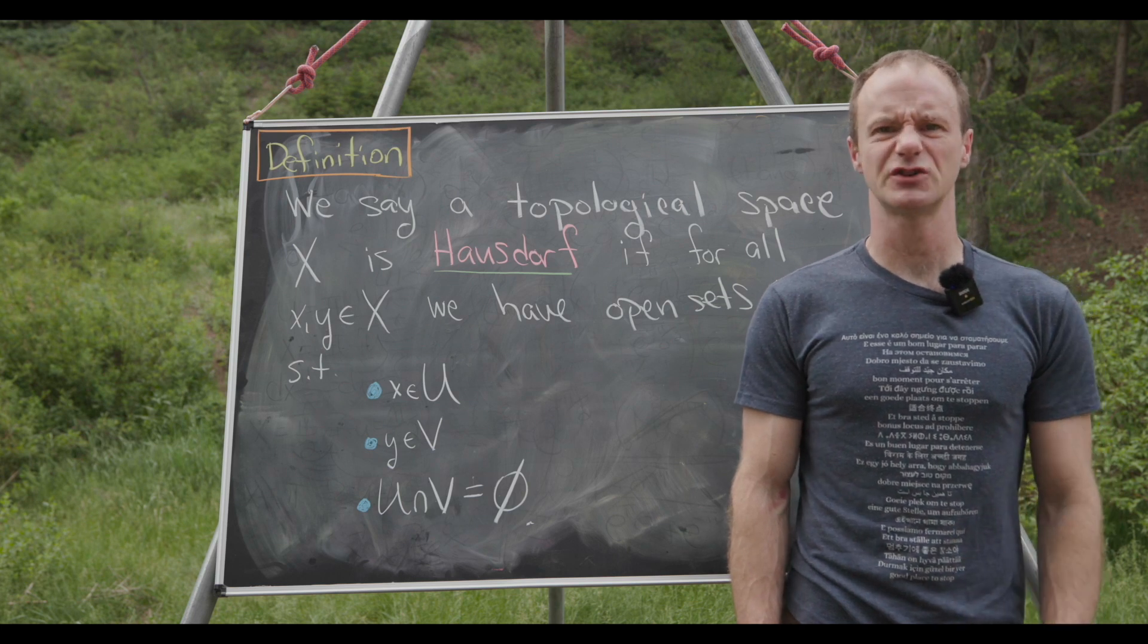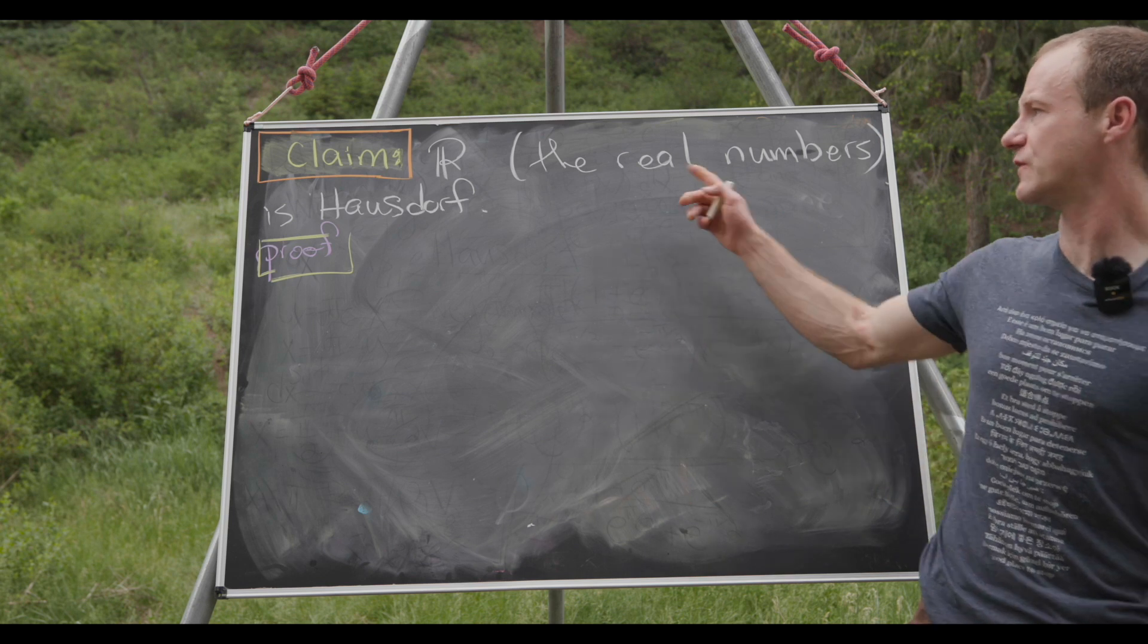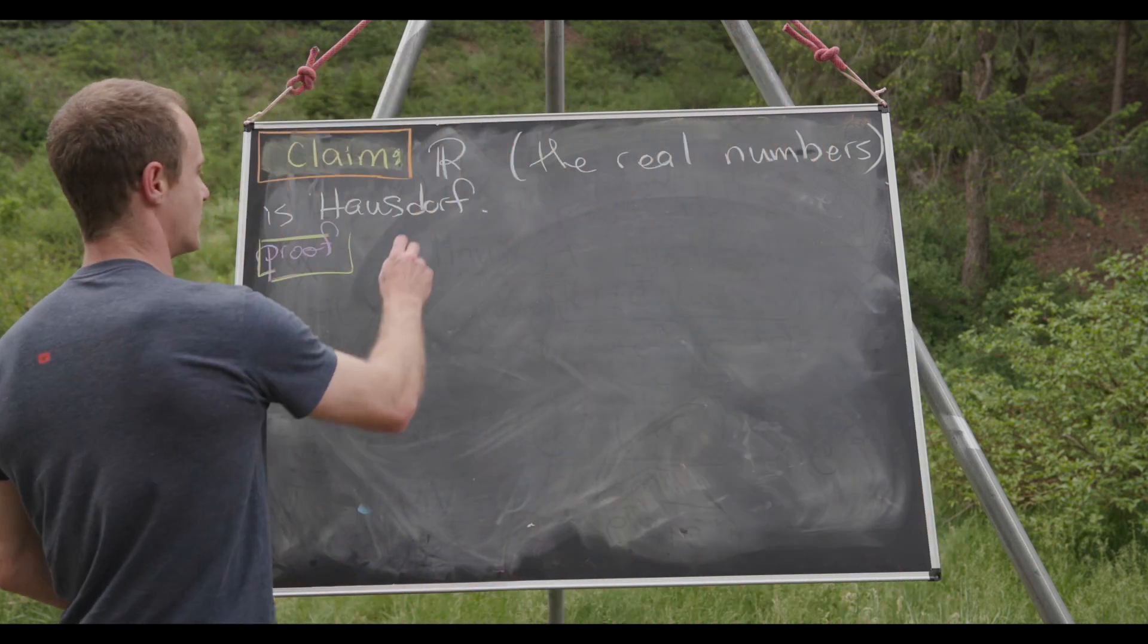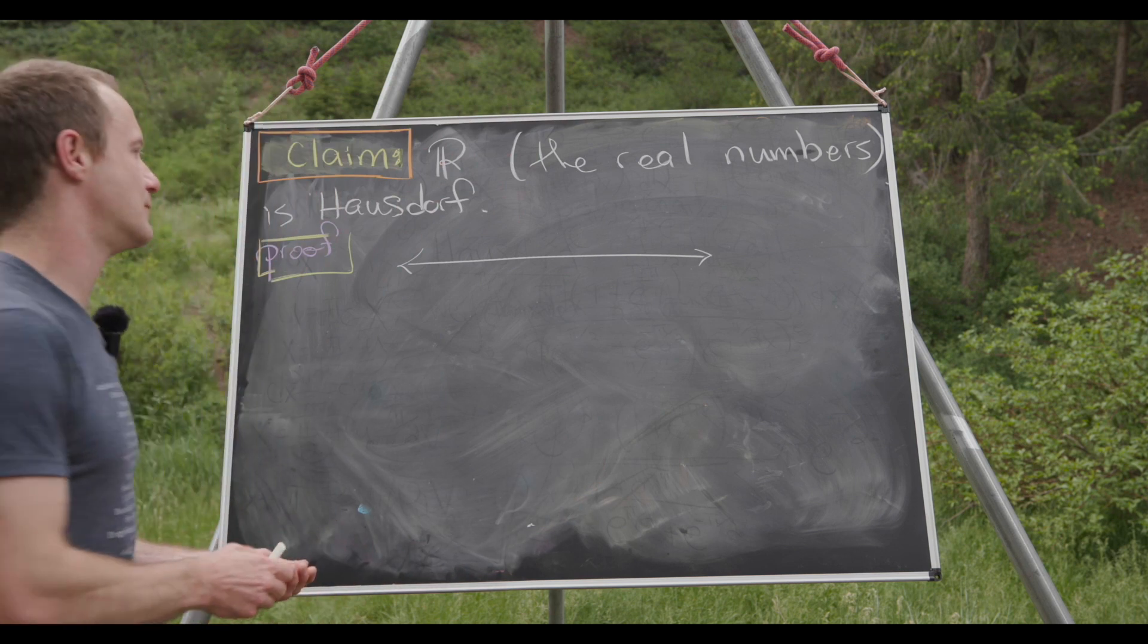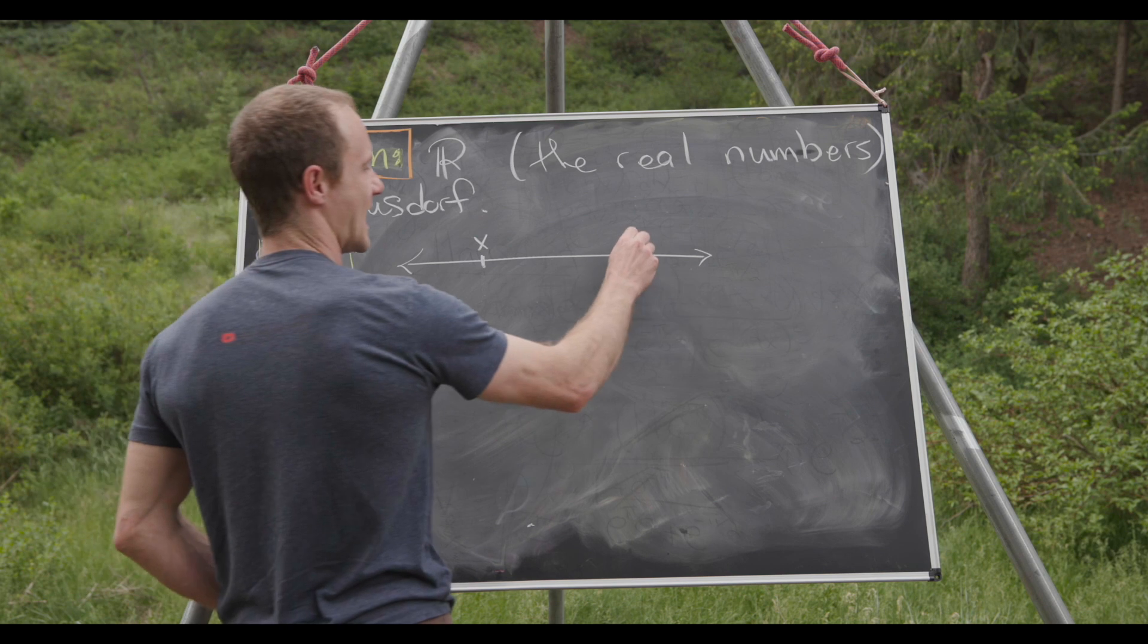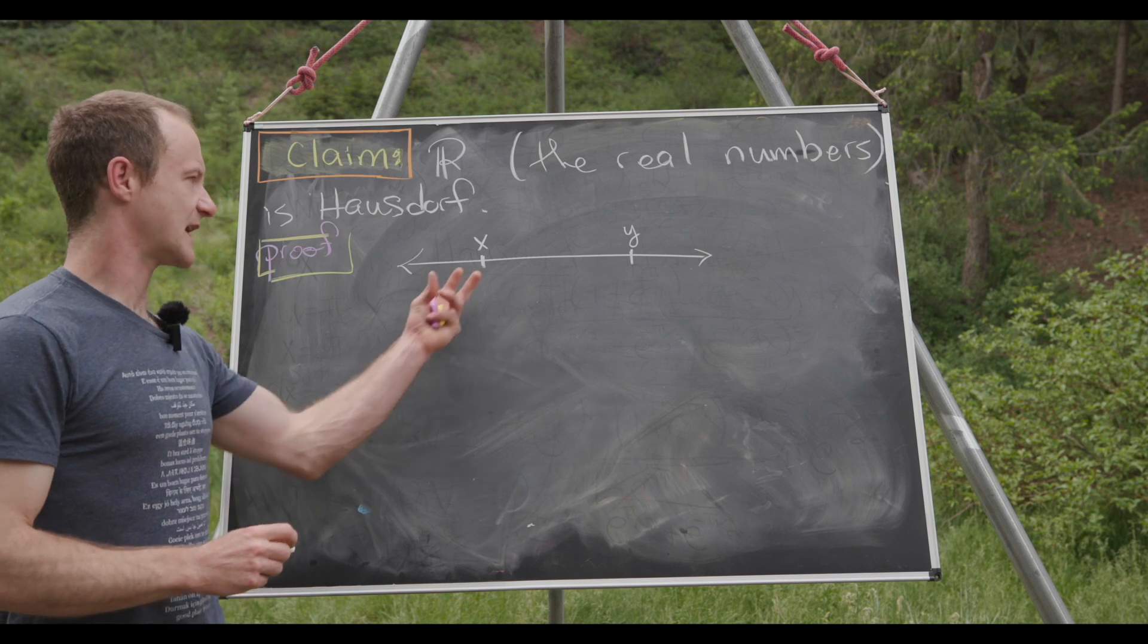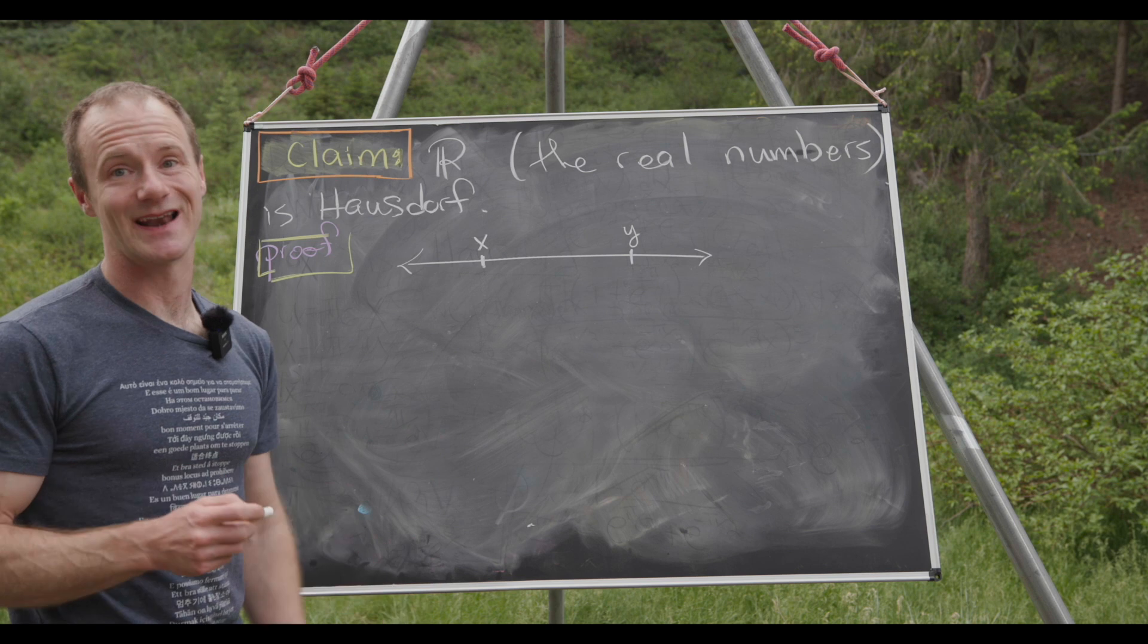Okay, so let's get to our first careful example. For our first careful example, we'll show that the real numbers R is a Hausdorff space. To start thinking about the proof, we want to think about the real numbers as a line and then put two points on this line. So this is the point x and this is the point y. And we want to find an open set that contains x and an open set that contains y that do not intersect.